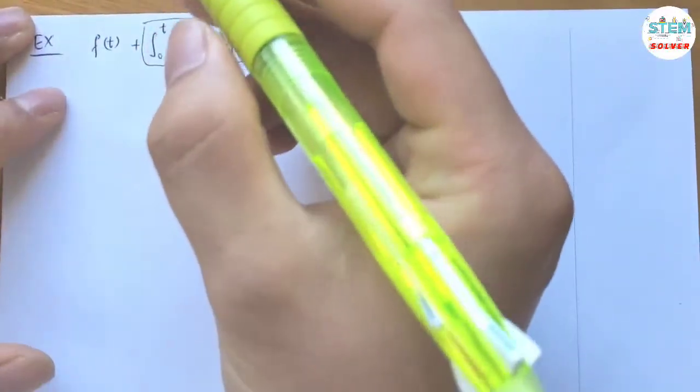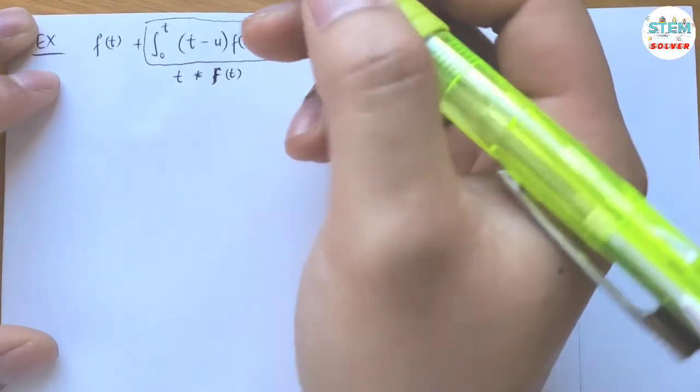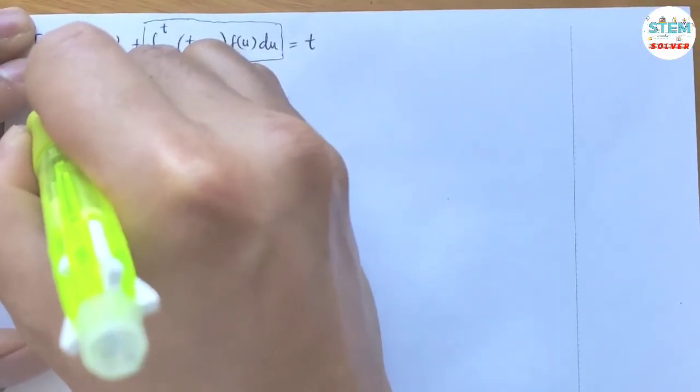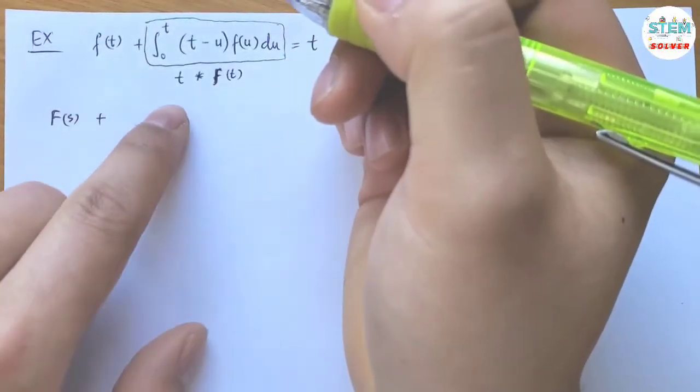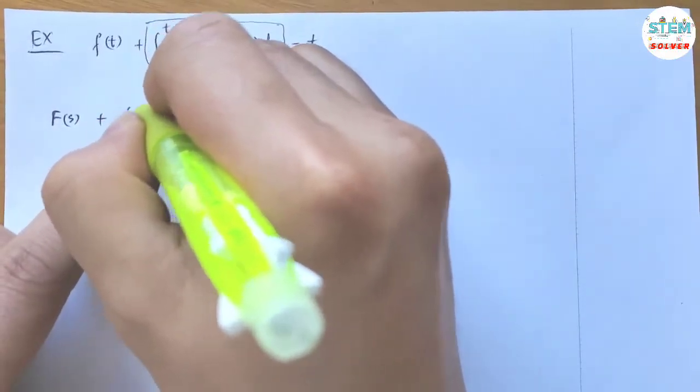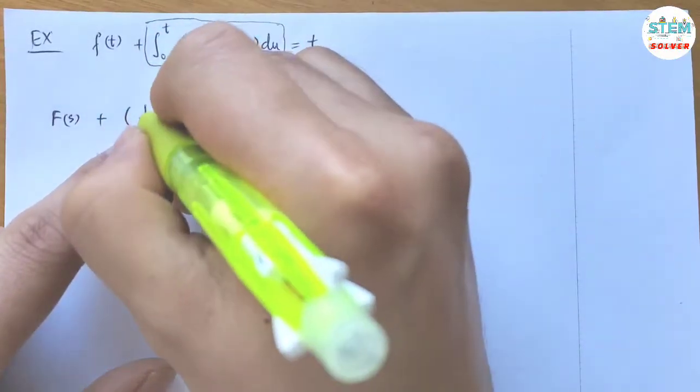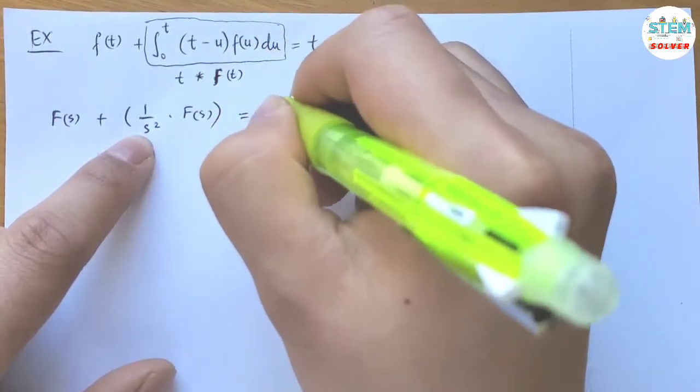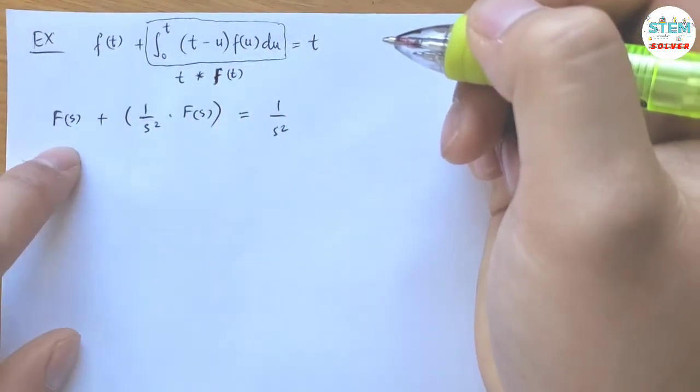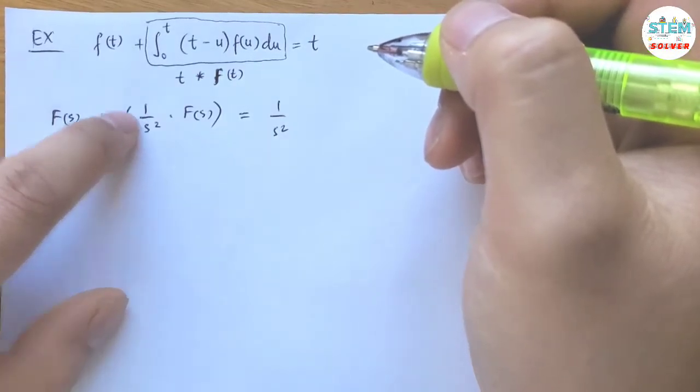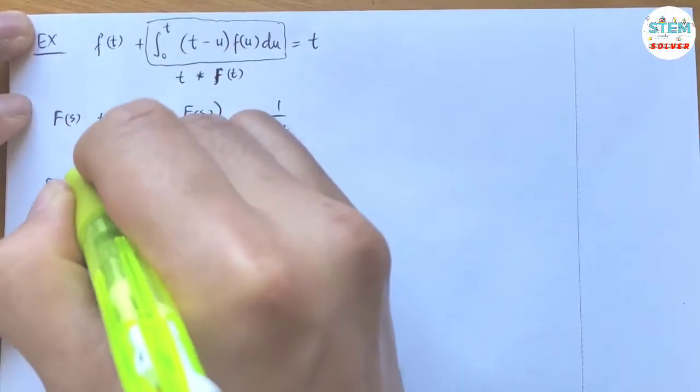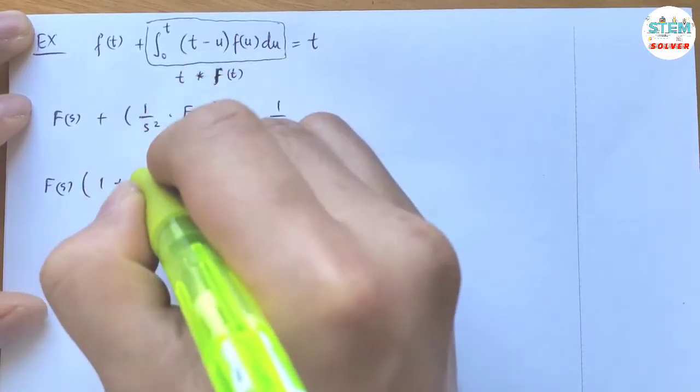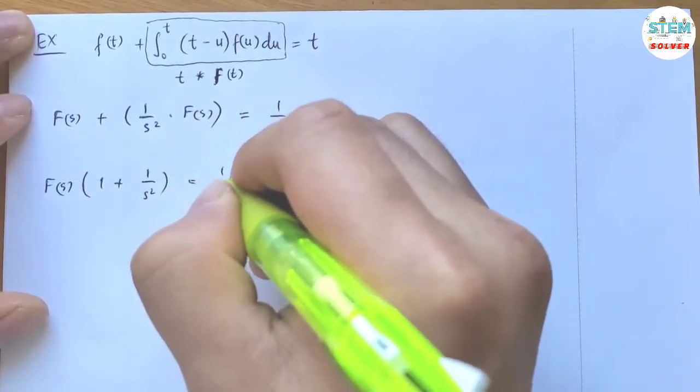So when I take the Laplace transform from both sides, I have capital F(s) plus the Laplace transform from this is 1 over s squared times capital F(s) equals 1 over s squared. And then factor capital F(s), and I'm left with 1 plus 1 over s squared equals 1 over s squared.